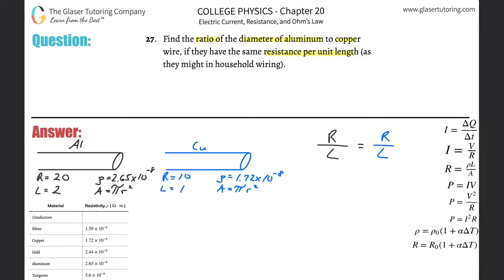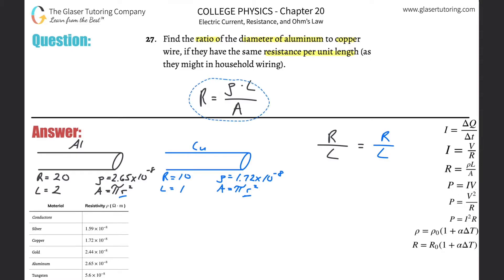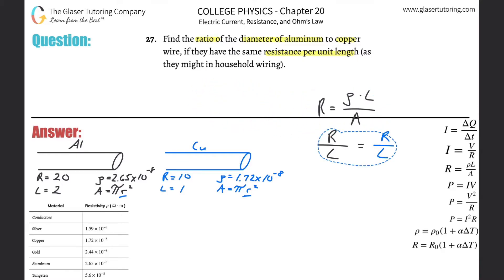Really the only unknown is the relationship between the radius of the aluminum wire and the radius of the copper wire. That's the hidden thing we're trying to find, and from the radius ratio we can find the diameter ratio. Let's start with the basic formula: resistance equals resistivity multiplied by length, all divided by the cross-sectional area — R = ρL/A.